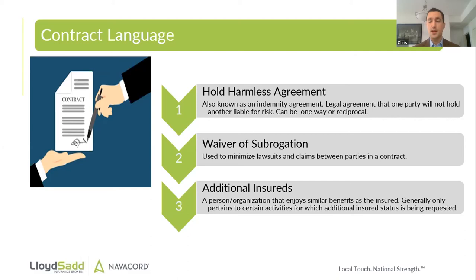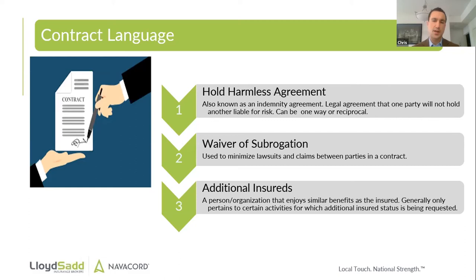Additional insureds — I'm sure everybody's familiar with this. On any project you're working on, everyone generally asks you to send a certificate of insurance and get them added as an additional insured. An additional insured is a person or organization that enjoys similar benefits to the insured, but it generally only pertains to certain activities for which that status is requested. When you're adding someone as an additional insured, you're basically attaching them to your insurance policy but only for that particular project. For instance, if you sign a contract with a general contractor for a project, adding them as an additional insured would only pertain to your operations there — it would not carry over to other job sites or other scopes of work.